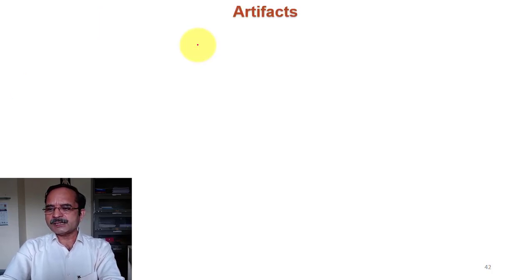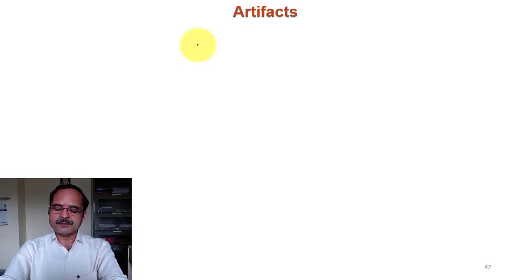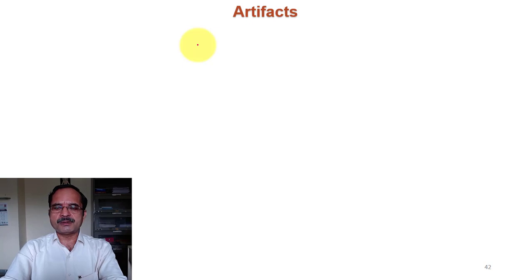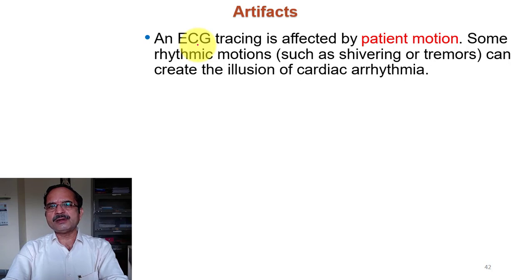This is an electrical signal and the amplitude is very small — just a few millivolts — and that's why it is susceptible to noise generated from other sources. This noise is called artifacts. We will see in detail later what the different sources of artifacts are.